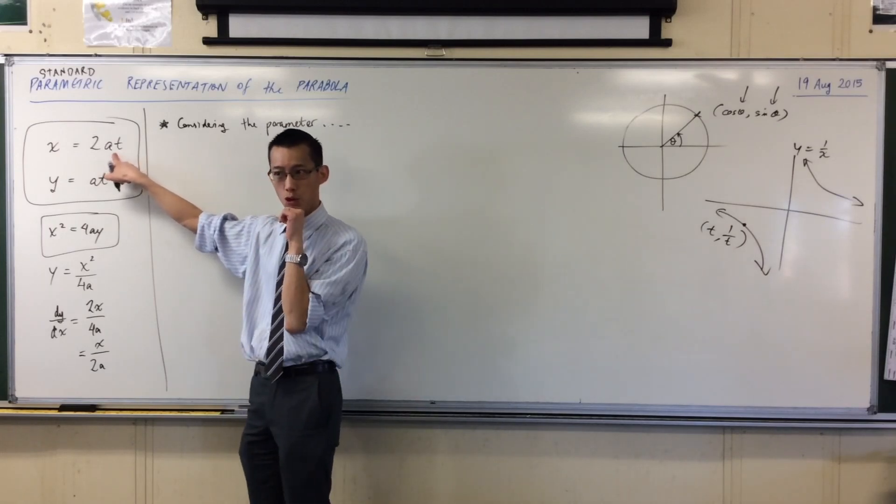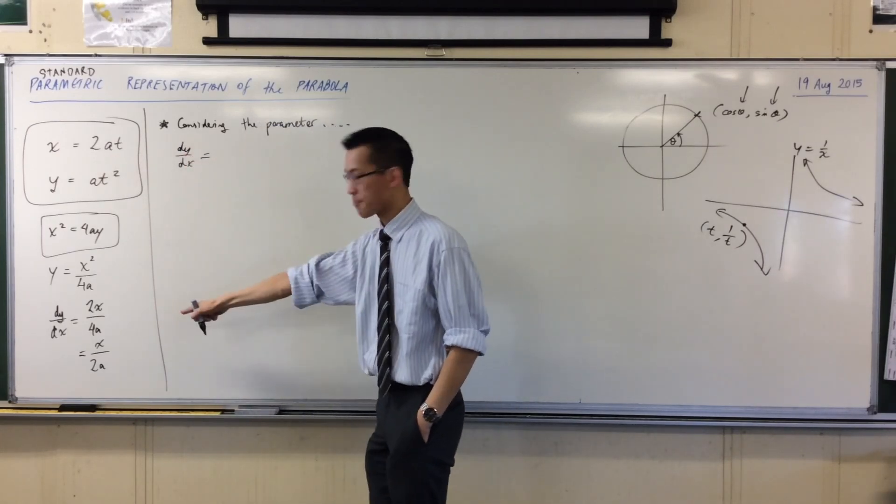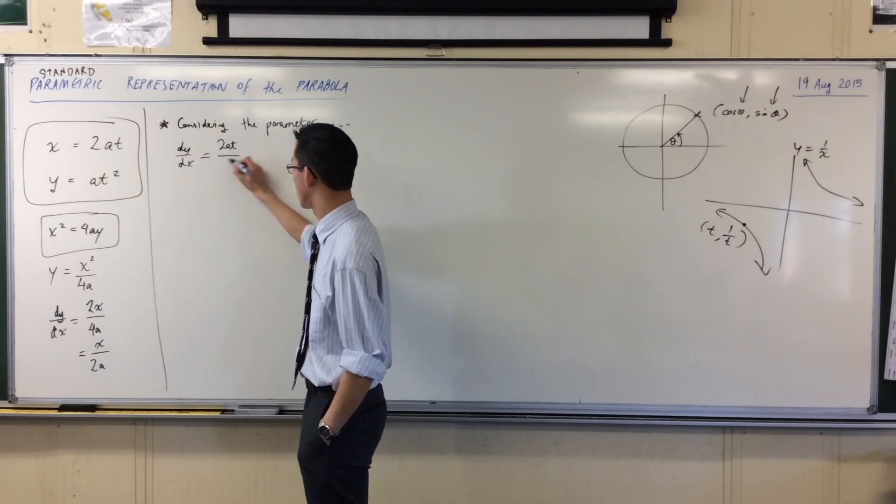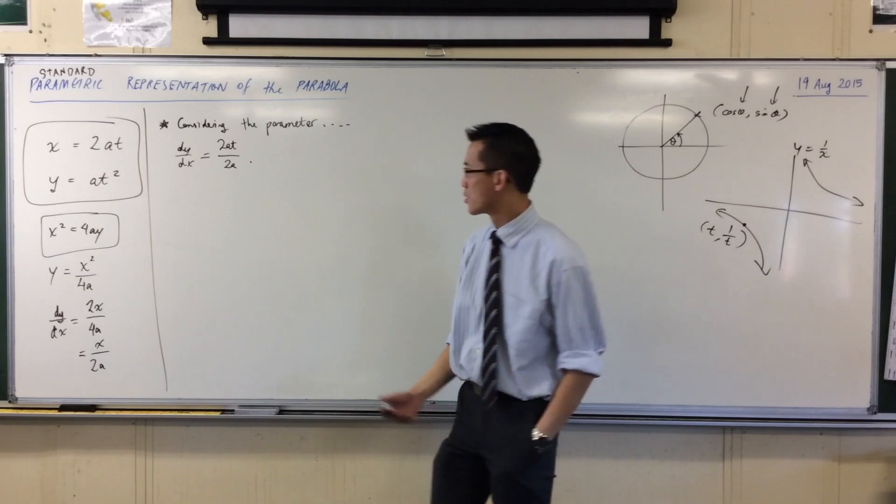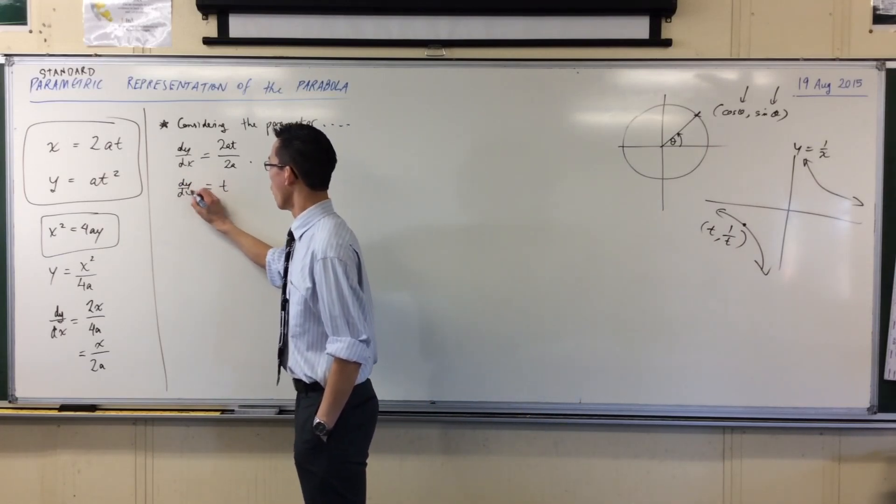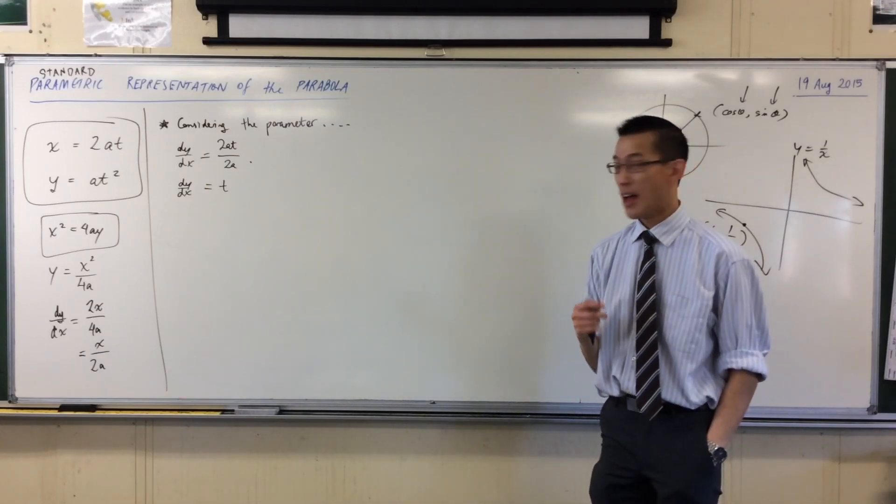If I know that x equals 2at, then dy on dx will be x, that's 2at, on 2a. Do you see that? Just simple canceling gives me this. So, what is the parameter in this representation of the parabola? And the answer is.